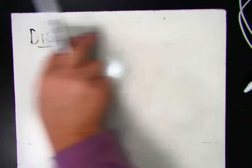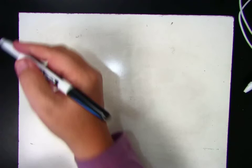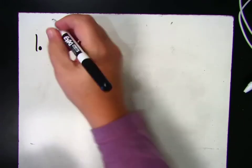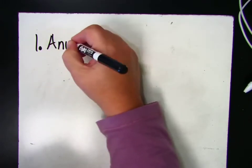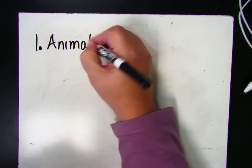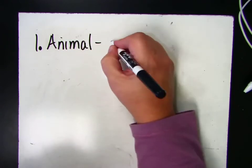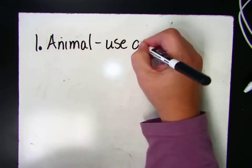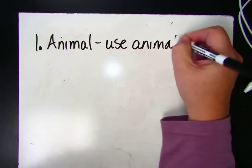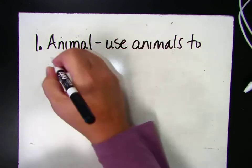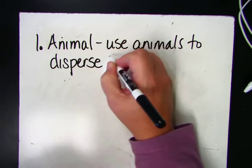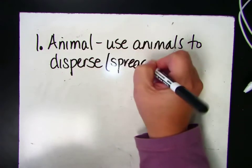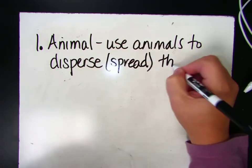So plants spread their seeds in different ways. One method that plants use to disperse their seeds is by animals. And this is probably the best way. They use animals to disperse or spread their seeds.